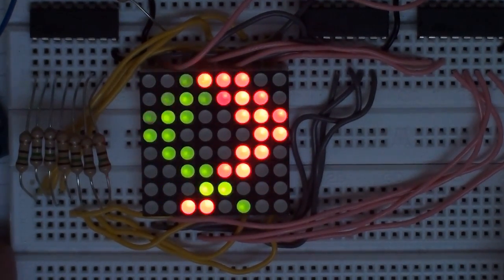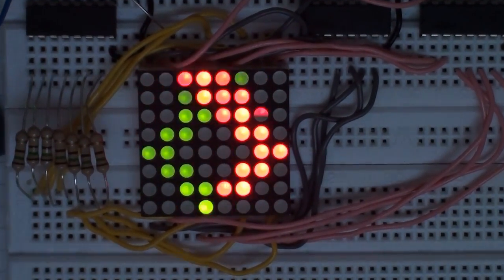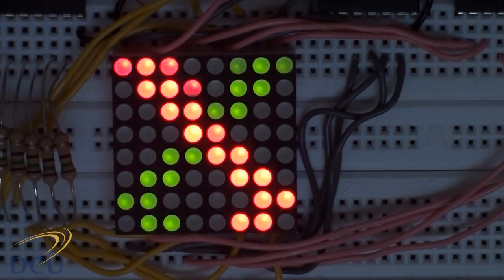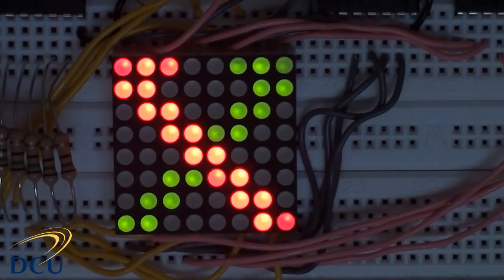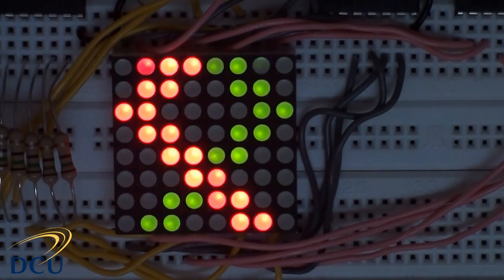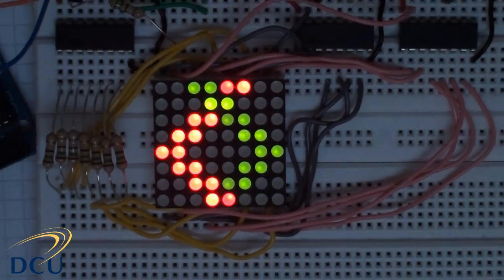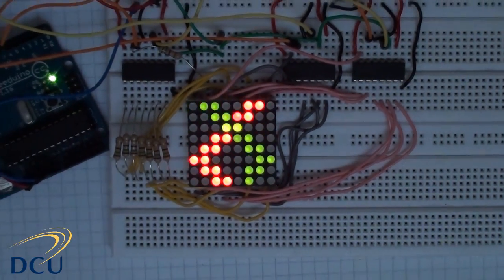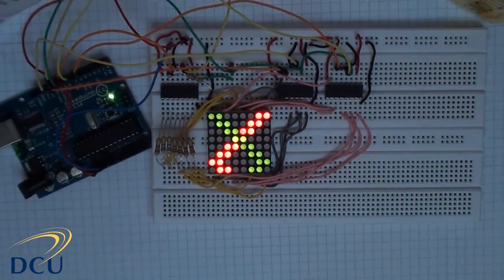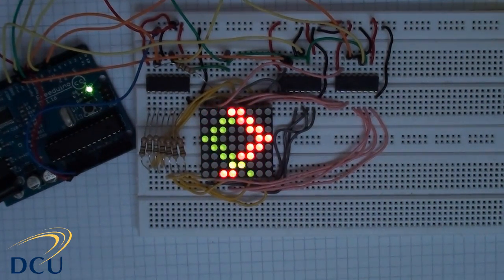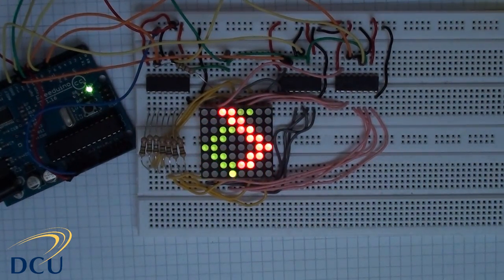The problem with this circuit though is that I am still driving the current through the resistors which are connected to the rows. We will get an uneven illumination depending on how many LEDs are lit on a particular row. We only light one row at a time, but we light multiple columns at the same time. The other problem is that we could potentially pull a very large current through the row and possibly damage the 74HC595.